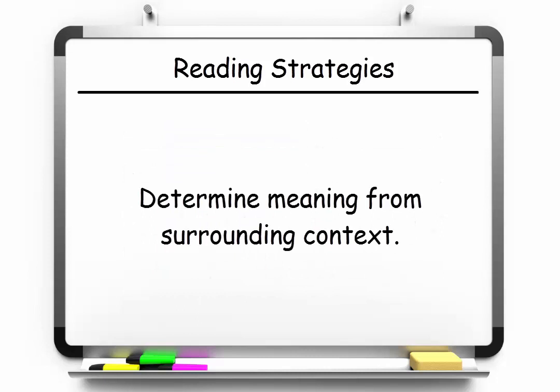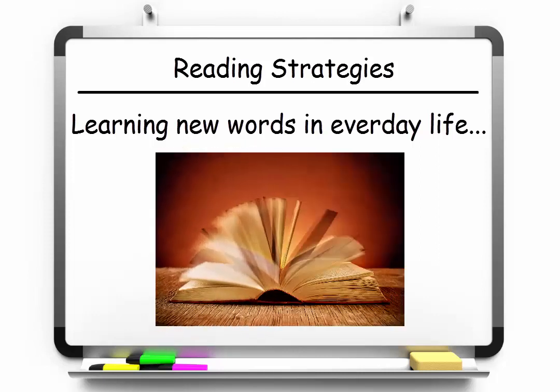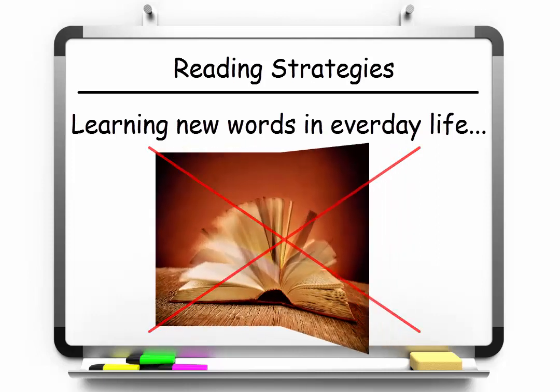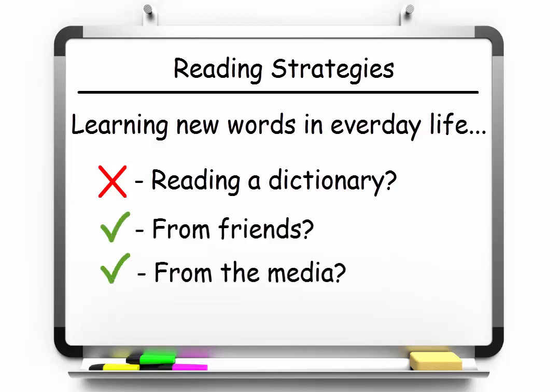The ability to determine meaning from the surrounding context is something that we all use every day. Think of the last few words that you learned in everyday life. You probably didn't learn them by randomly flipping through a dictionary. Instead, you may have heard or seen them used by friends or in the media, and by seeing these terms used enough times, you probably managed to figure out their meanings by using the surrounding contexts.